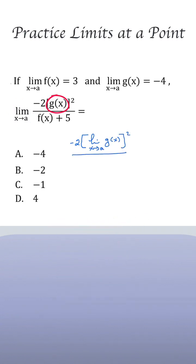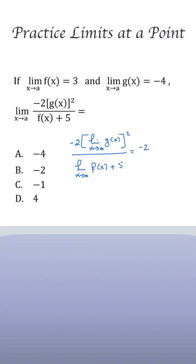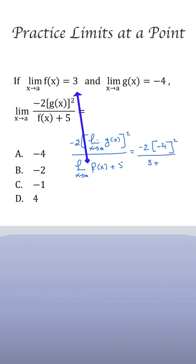and we give the limit as x approaches a for the function f of x, plus 5. Now we can replace. We say it's equal to minus 2, open bracket, and we put minus 4 and make it squared, over — so here is 3 — and we have plus 5.